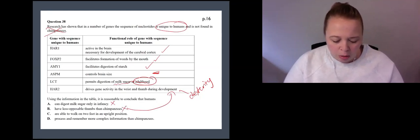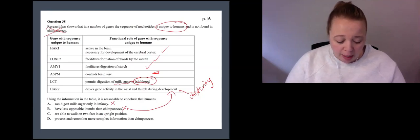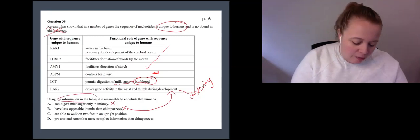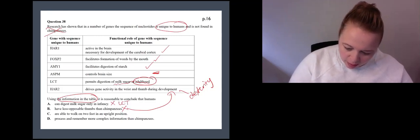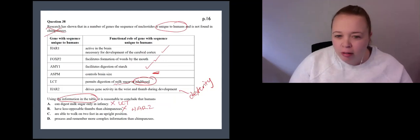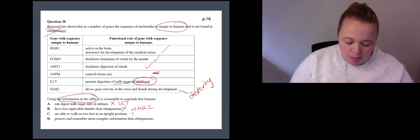Humans can walk on two feet in an upright position. I mean, we can, but is there any information in the table to suggest this? So this one here had LCT. This one here, hang on guys. So A linked to LCT. B linked to HA2. Now we know that humans can walk upright on two feet, but is there anything in that table that refers to it? We'll just put a question mark there for now.